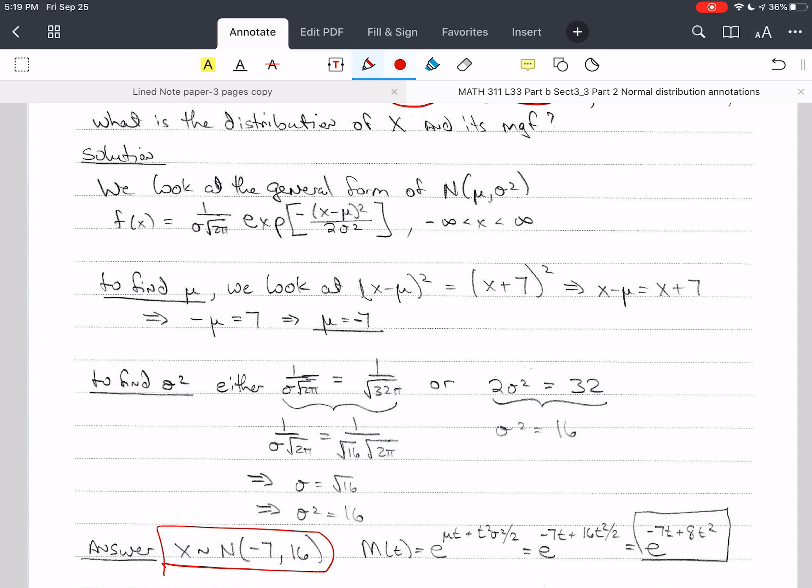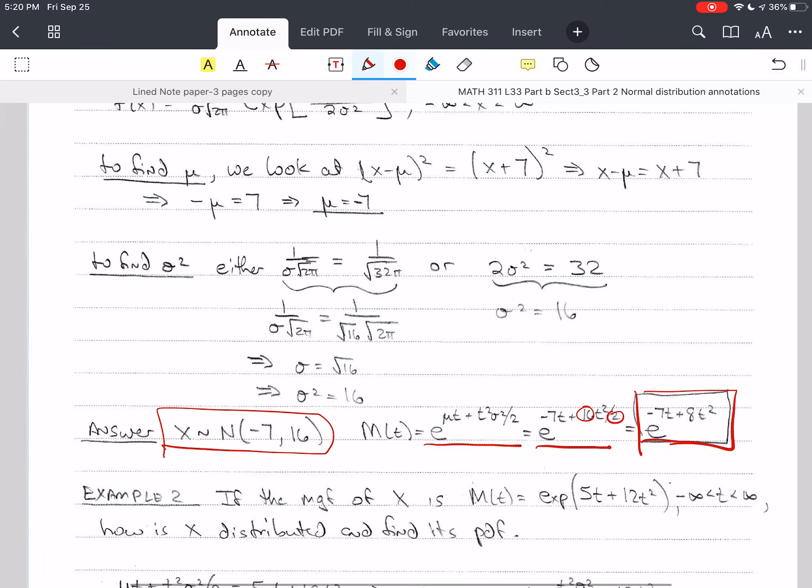Now, to find the moment generating function, I first write out the equation of the moment generating function. And then I simply plug in for mu and sigma squared and simplify. Because the 16 divided by 2 is 8. And so just plugging in, I get that answer.